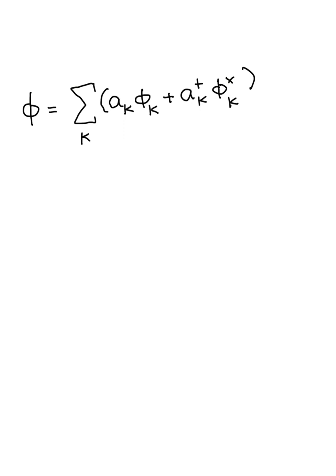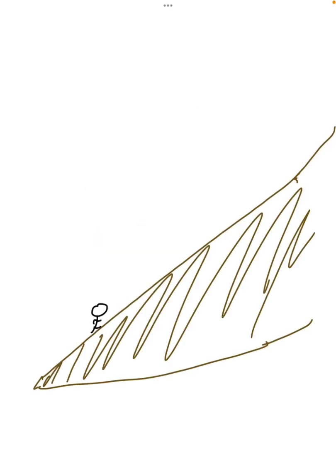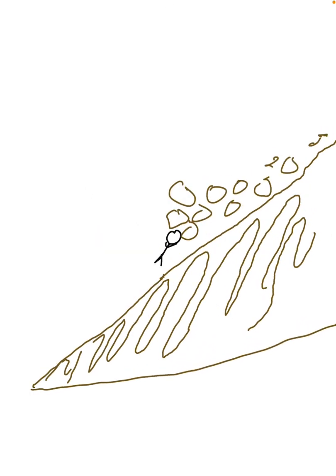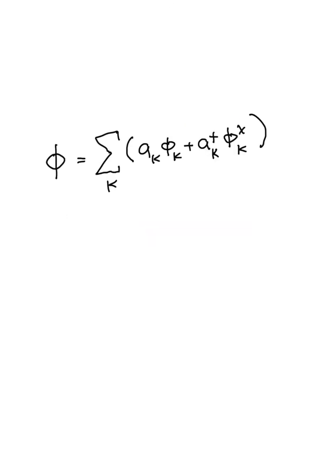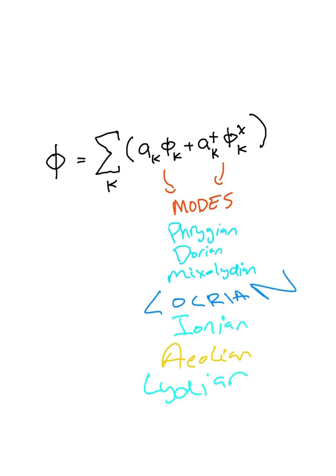If you're confused, don't worry. Quantum field theory isn't exactly a walk in the park. It's more like a sprint through an avalanche. The main idea here is that our field can be decomposed into other components, called modes, which we add together to get the total field. Just like how three can be split up into three parts.